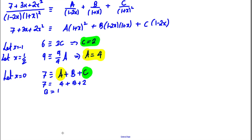So express f(x) in partial fractions then. f(x) is therefore equal to 4 over (1 subtract 2x) plus 1 over (1 plus x) plus 2 over (1 plus x) squared. And we're done for the first part.